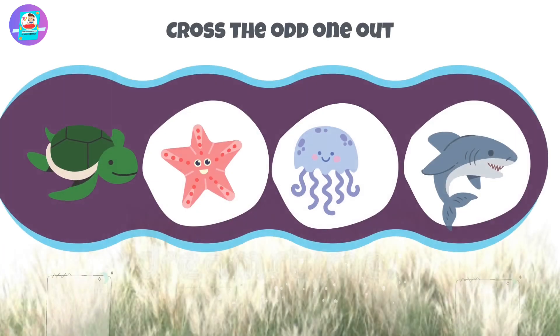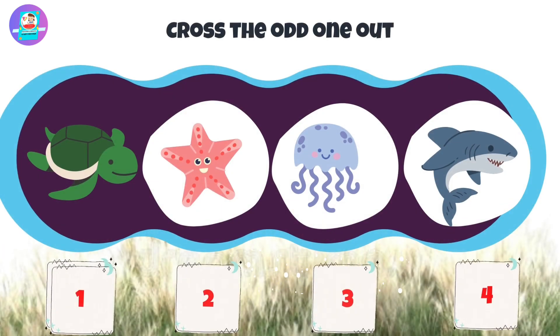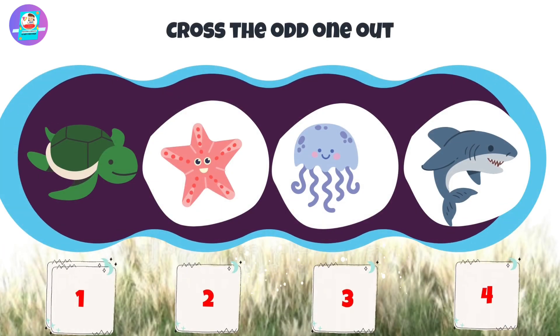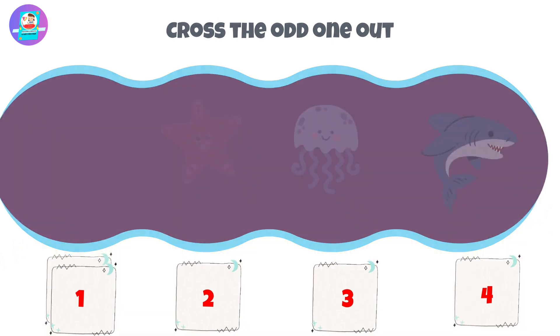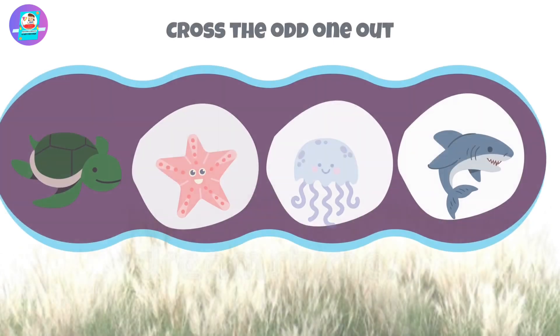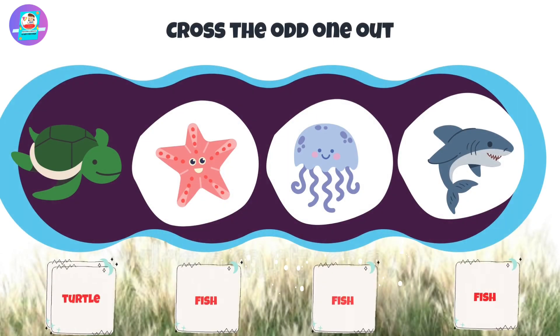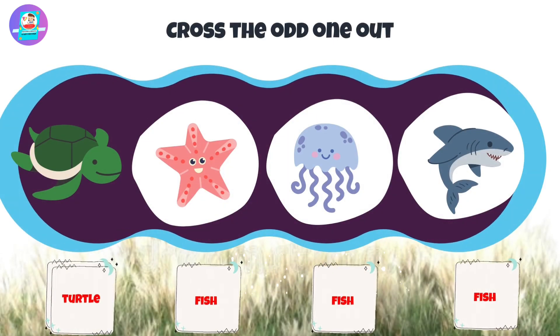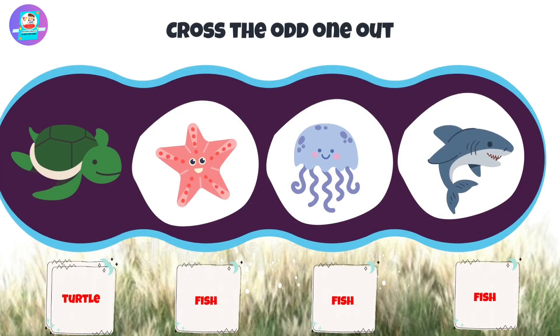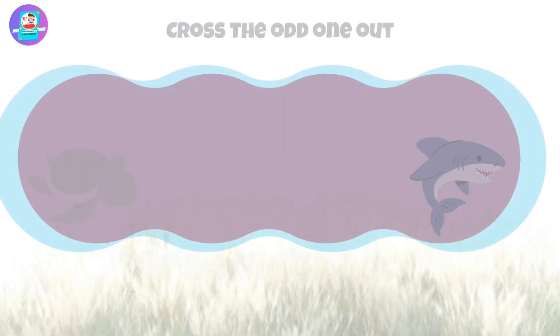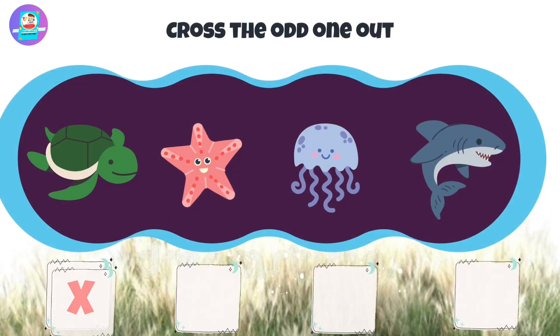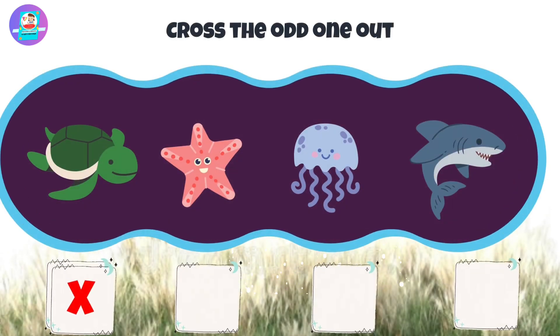Okay, let's check first. When we see here we have 3 fish and 1 turtle. There is a turtle that is odd. So put a cross on this turtle.